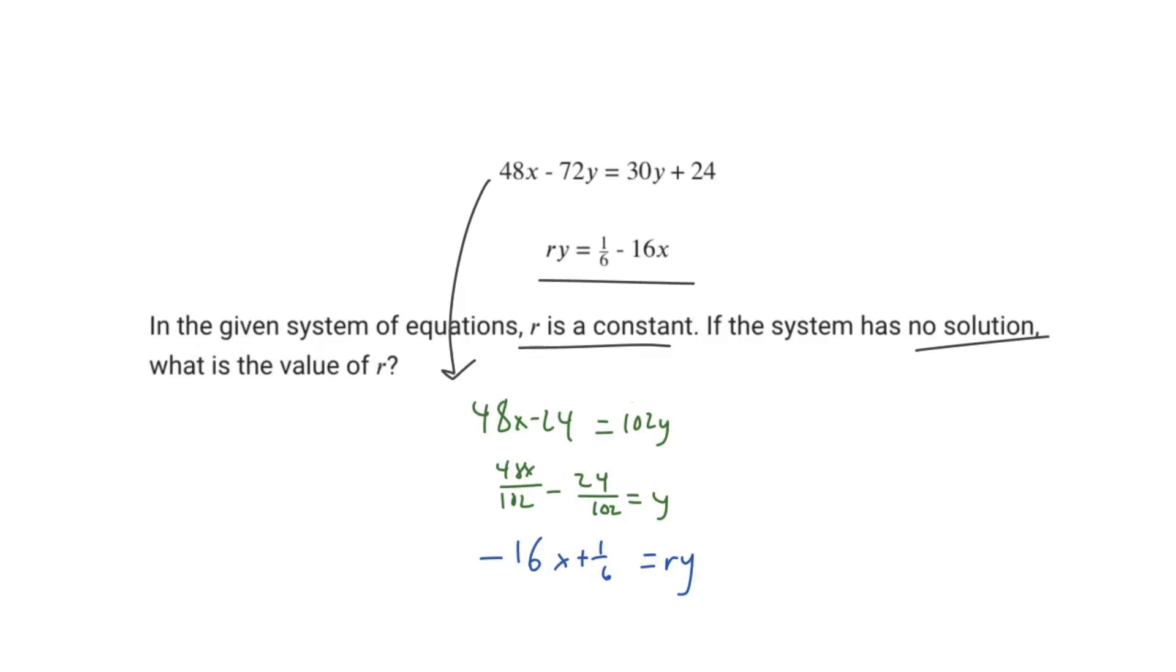This is important because we want to know the actual slopes, right? So our actual slope here is 48x over 102, and this one over here is negative 16x. And this is important because when you talk about a system with no solution, that means the lines don't intersect. And in a system of linear equations, the only way that those two lines don't intersect is if those lines are parallel.